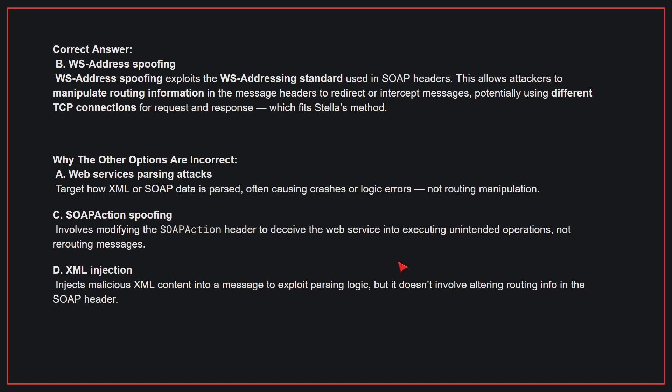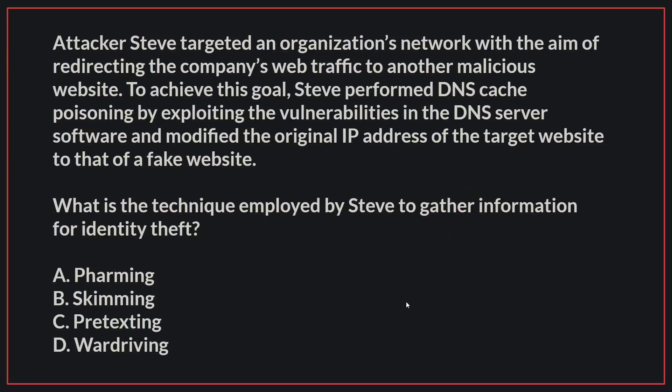Therefore, the correct answer is B. Attacker Steve targeted an organization's network with the aim of redirecting the company's web traffic to another malicious website. Steve performed DNS cache poisoning by exploiting vulnerabilities in the DNS server software and modified the original IP address of the target website to that of a fake website. What is the technique employed by Steve to gather information for identity theft?